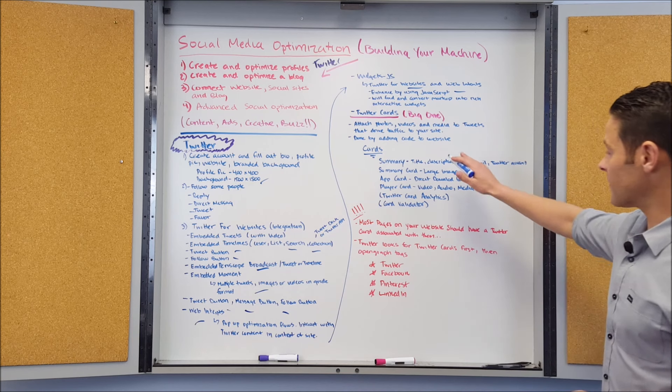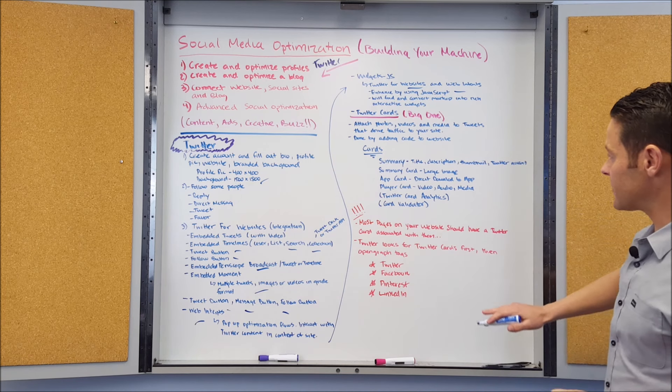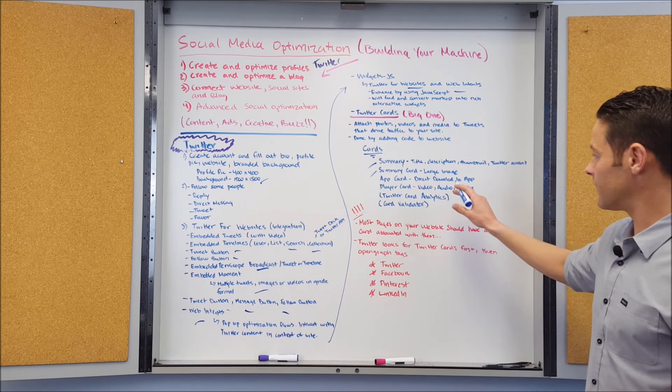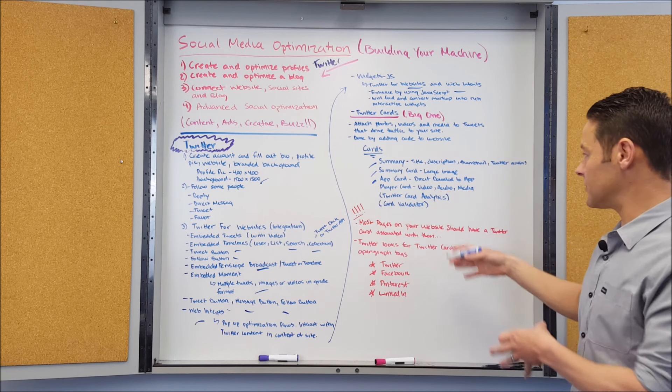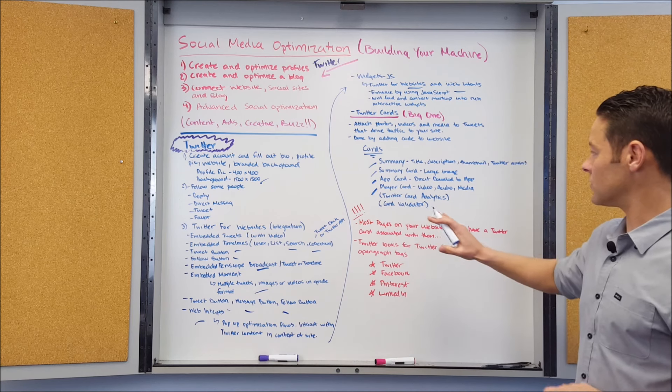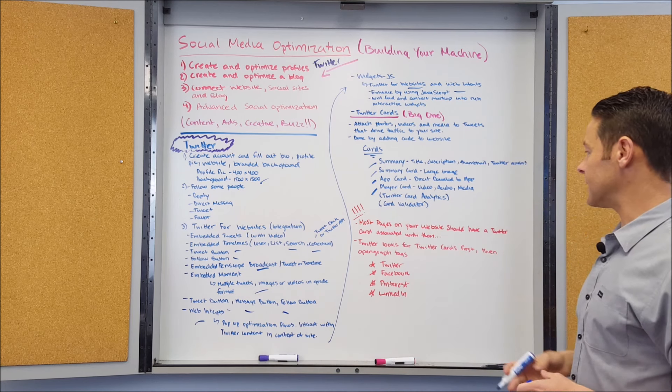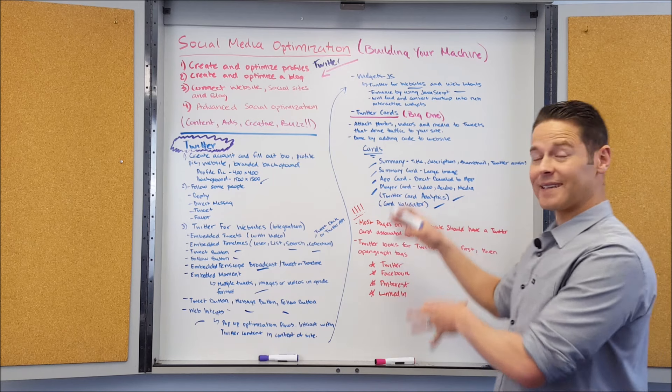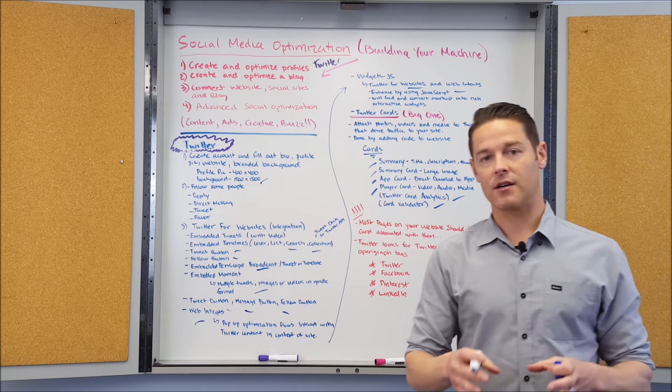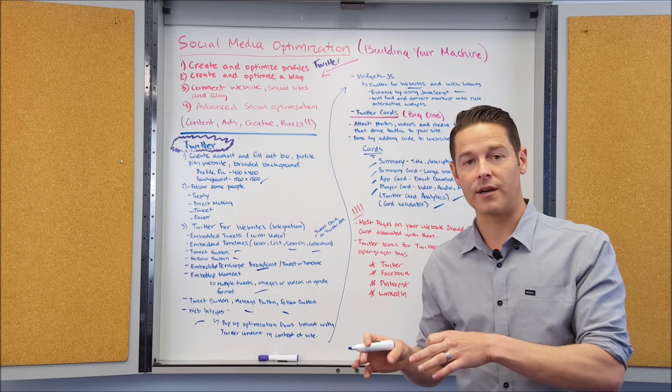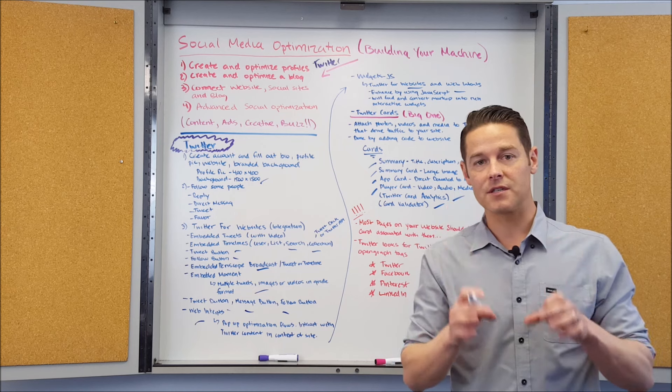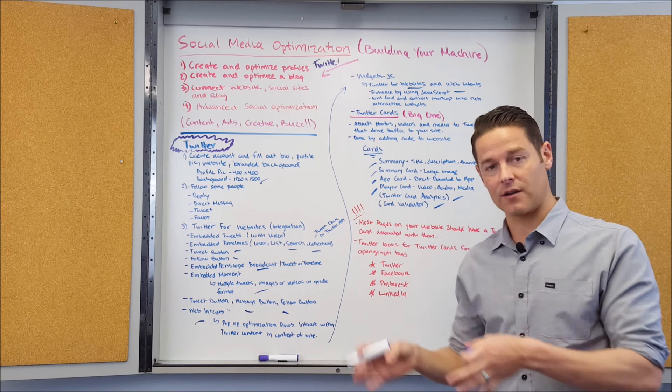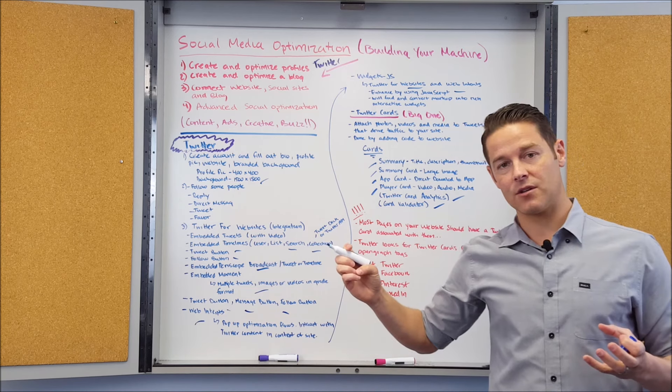Getting back into Twitter cards, the different types are: you have a summary card and you can have a summary card with a large image as well. You can have an app card which allows you to have a direct download to an app. You can have a player card that allows you to directly play video, audio, or media. All these things come with Twitter analytics and there's even a card validator. Just to be clear, a Twitter card is basically markup that you put inside of your website that tells Twitter that you want to associate this photo or this video or this application with this tweet. Then what happens is when that URL gets shared on Twitter, that pulls in that information from that Twitter card markup and then it displays it on Twitter.